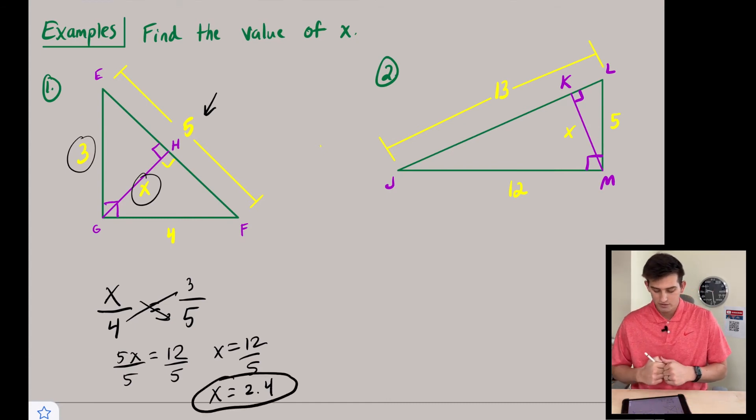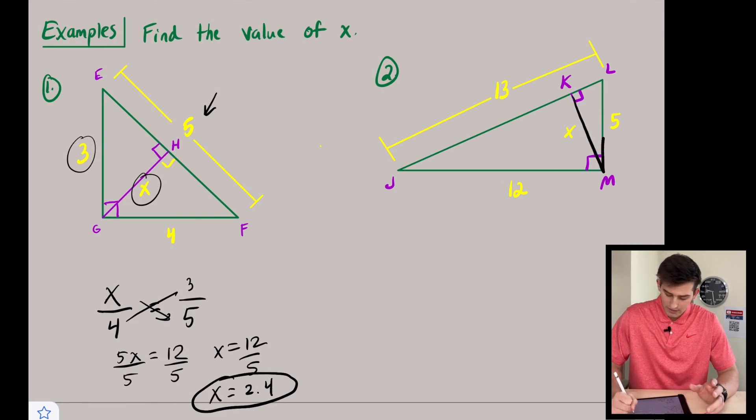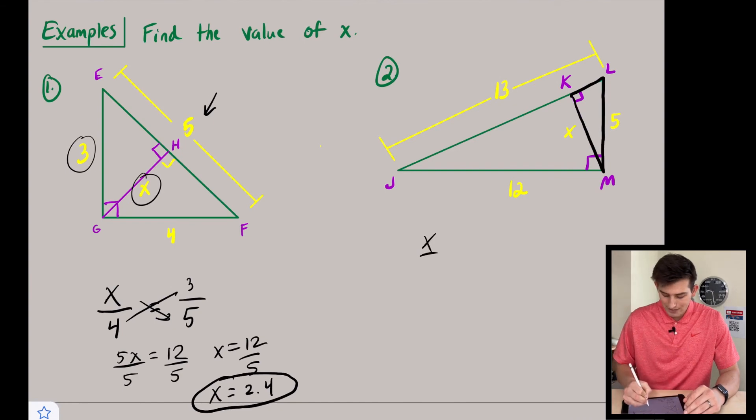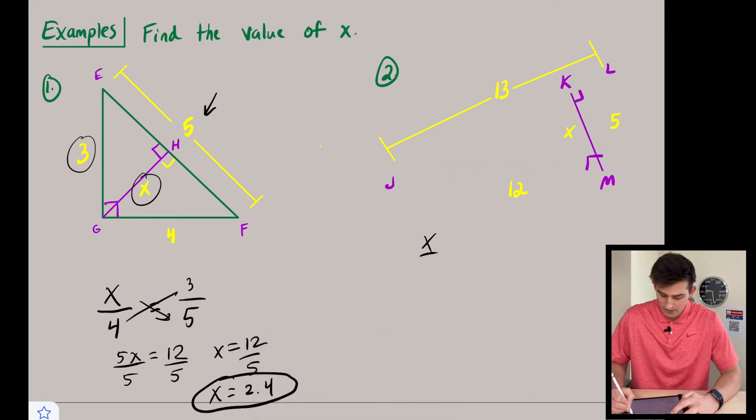All right, now let's look at number two. So number two, we're still trying to find the altitude. And if we notice, our altitude here is located on, if we think about this teeny tiny triangle right here, it's the longer leg of this smaller right triangle.